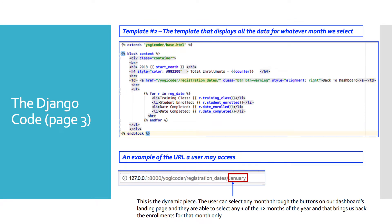Template Number Two displays the data once the user clicks into a given month. We extend our base.html template, and inside the container we have an h3 tag showing '2018' followed by the variable start_month — so if they select February, March, or August, it corresponds to the button clicked. We also show the total enrollments via the counter variable, and include a hard-coded back button to the first view at /yogicoder/registration_dates/.